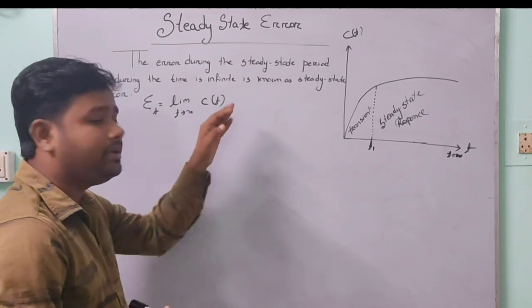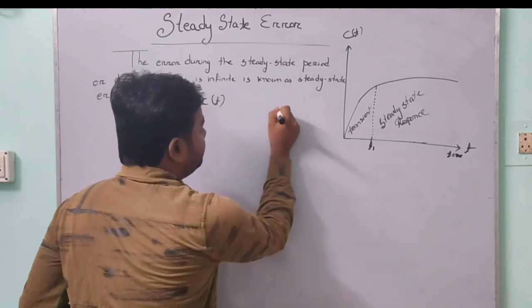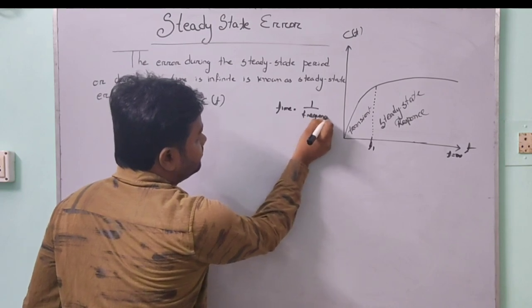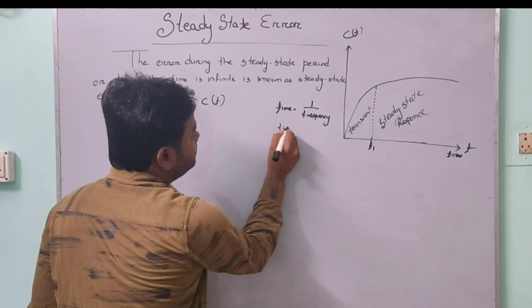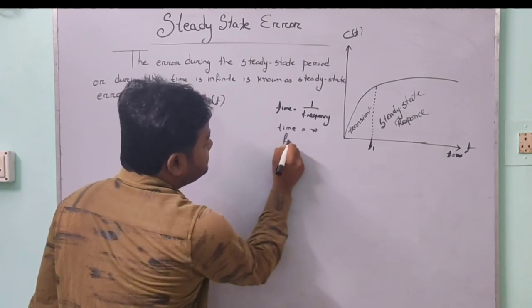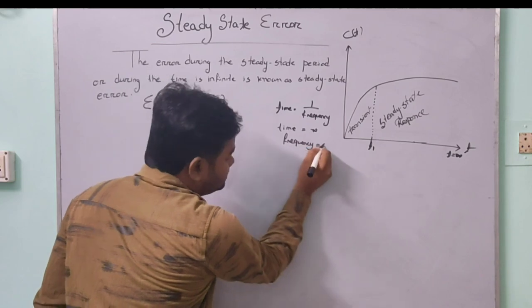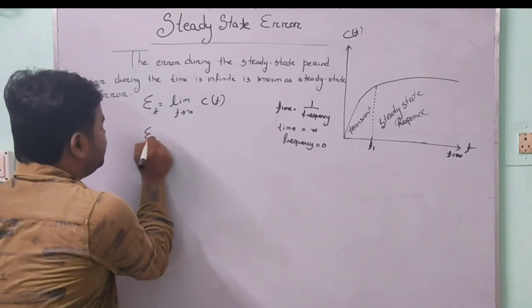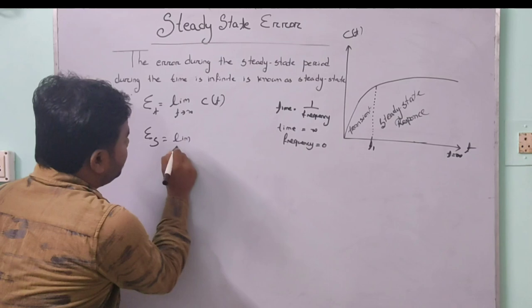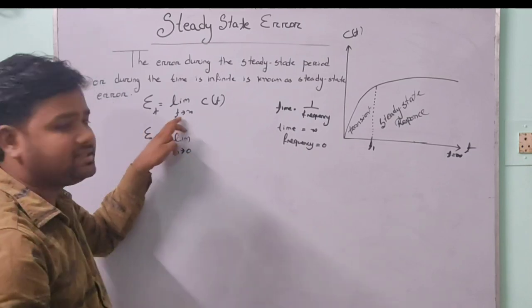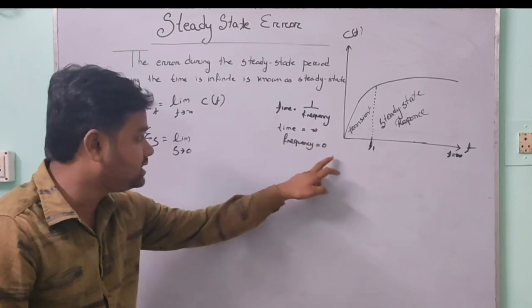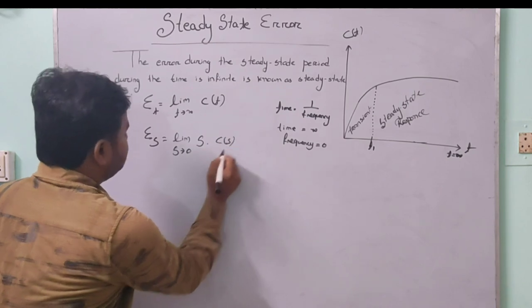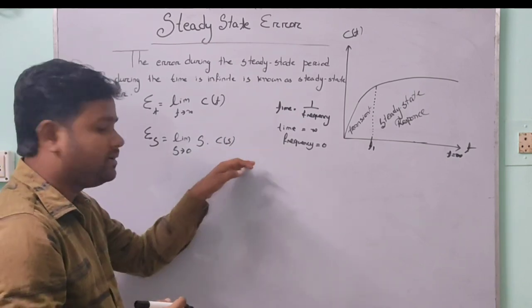If we convert from time domain to frequency domain, we know that time t equals 1 divided by frequency. So if time equals infinity, then frequency will be 0. By applying the final value theorem, the steady state error E_SS equals limit s tends to 0 of s into E(S). This is the steady state error in the frequency domain.